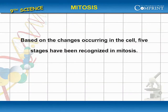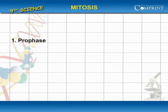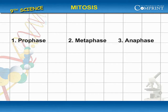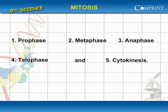Mitosis. Based on the changes occurring in the cell, five stages have been recognized in mitosis. First, prophase. Second, metaphase. Third, anaphase. Fourth, telophase. And fifth, cytokinesis.